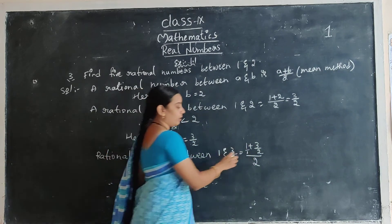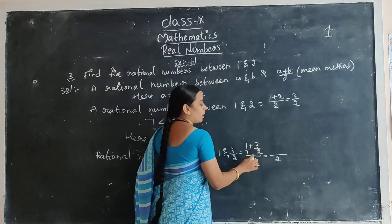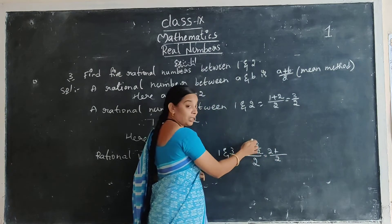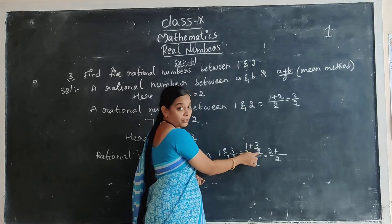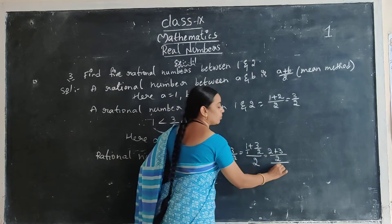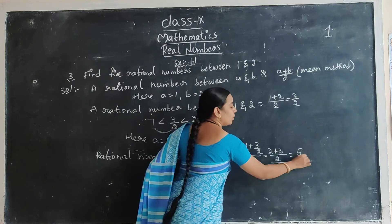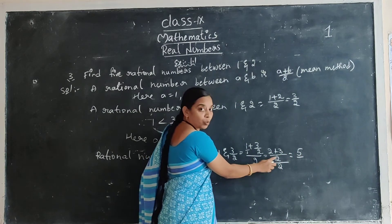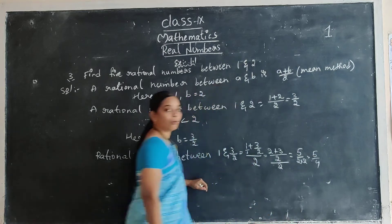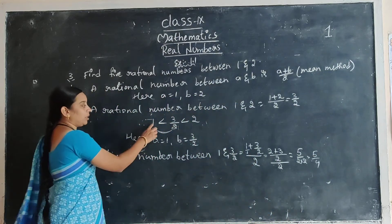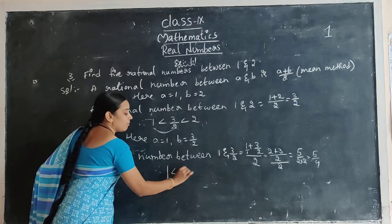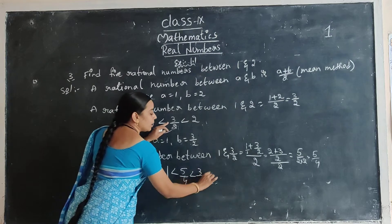First simplify the numerator values. 1 and 2, LCM is 2. 1 times 2 is 2, and 1 times 3 is 3. By 2. Now 2 plus 3 is 5. The 2 is in denominator and this 2 is also denominator, so write 2 into 2. 2 into 2 is 4. Now 5 by 4. In between 1 and 3 by 2, the rational number is 5 by 4. So: 1 less than 5 by 4 less than 3 by 2 less than 2.